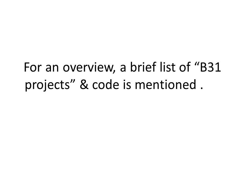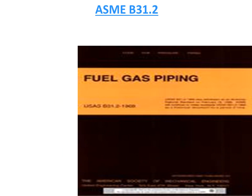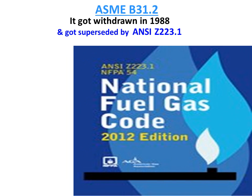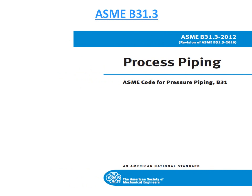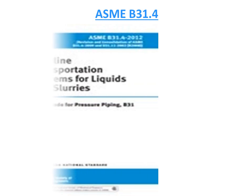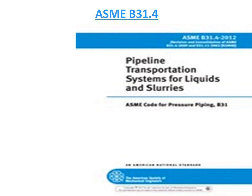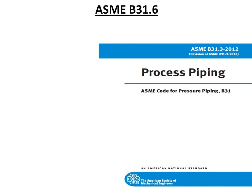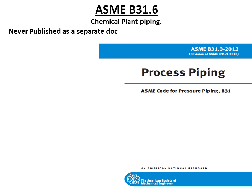For an overview, a brief list of B31 projects and codes: ASAB31.1 is for power piping. ASAB31.2 was meant for fuel gas piping but was withdrawn in 1988 and superseded by ANSI Z223.1, the National Fuel Gas Code. ASAB31.3 is for process piping. ASAB31.4 is for pipeline transportation systems for liquids and slurries. ASAB31.5 is for refrigeration piping and heat transfer components. ASAB31.6 was meant for chemical plant piping but was never published as a separate document and was pulled into B31.3 itself.